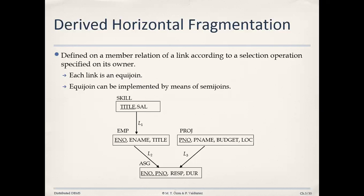Links are normally represented in terms of equi-join. For example, in this diagram, skill has a relationship with employee, and that relationship or link is represented in the join graph as L1. L1 represents that the attribute 'title' exists in both the skill relation and the employee relation, making it responsible for the equi-join between skill and employee, forming the link L1. In this relation, skill is the owner relation and employee is the member relation.